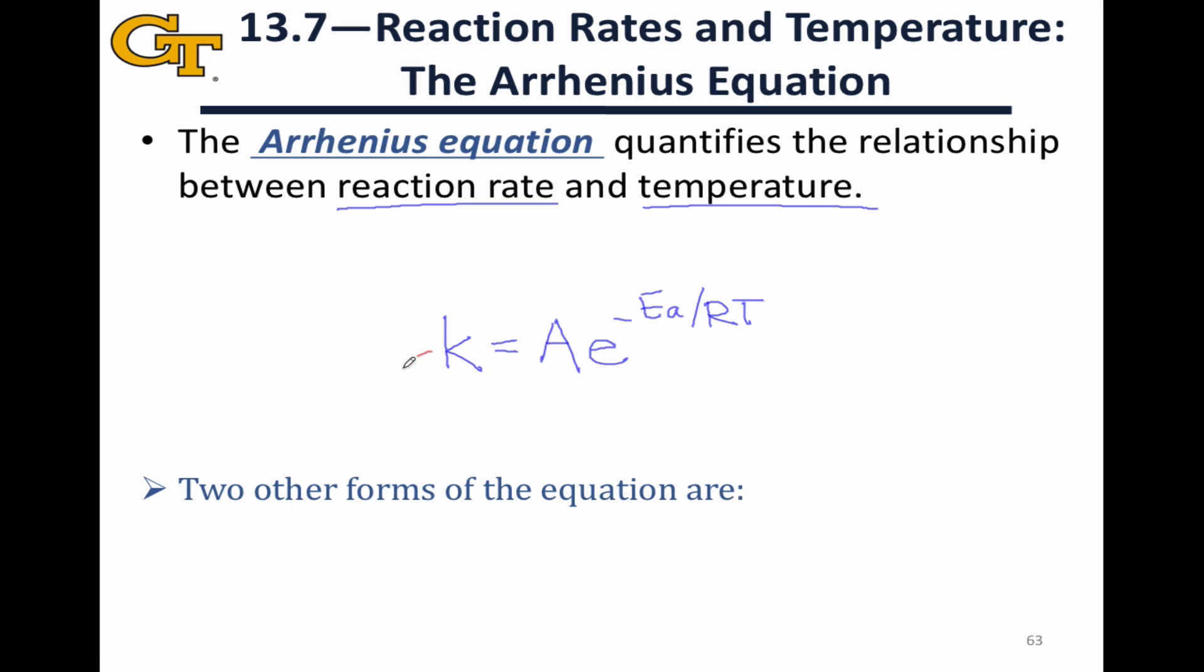K is a value we've seen before. This is the rate constant. This is what appears in the rate law as the constant of proportionality between concentrations and the differential rate.